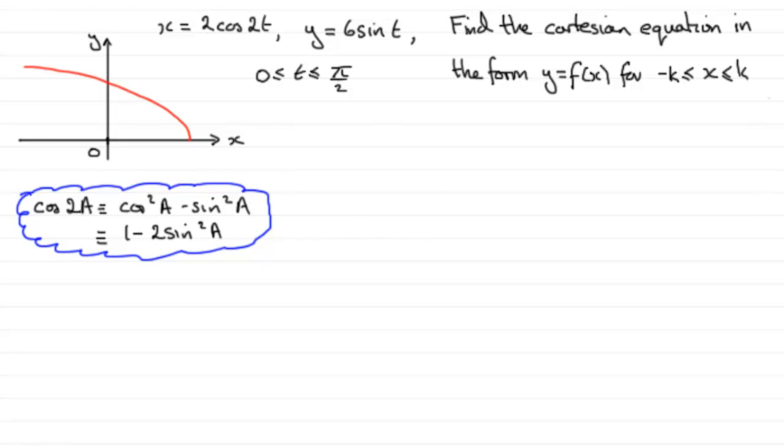So what I'm going to do is we'll take the x. Let's say we have that x equals 2 cos2t. So we now know that this can be written as 2 multiplied by 1 minus 2sin²t. What used to be a is now t. So it's sin²t. Cos2t is the 1 minus 2sin²t.